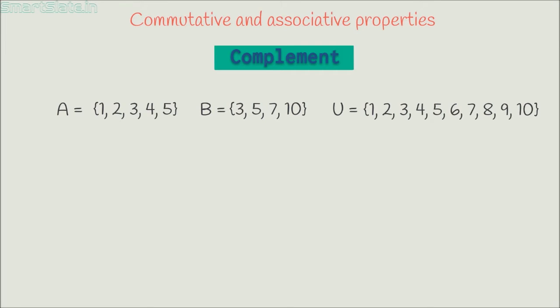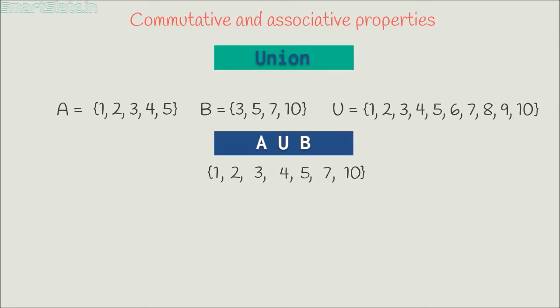The first operation we are going to study is union. Union of these two sets is a set of all elements which are either in set A or in set B or in both. Hence, A union B is set with elements 1, 2, 3, 4, 5, 7 and 10.